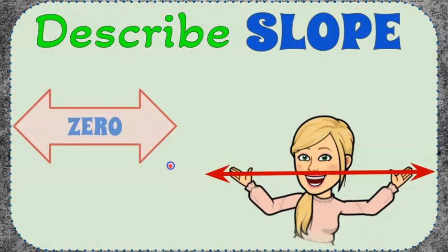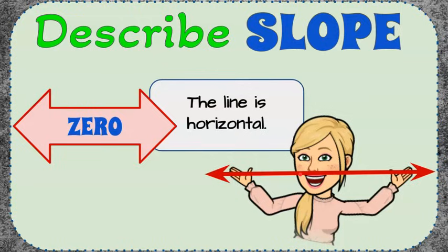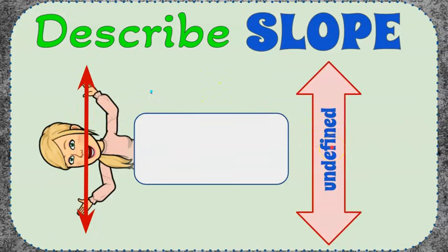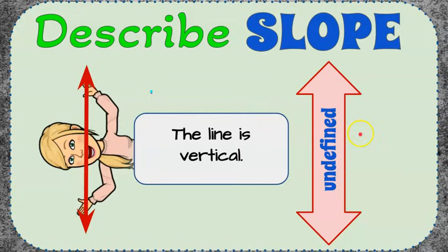A zero slope looks like a horizontal line. If you get a zero slope, you have a horizontal line. For a vertical line, the slope is undefined — if you have a denominator of zero, dividing by zero gives you undefined, which tells you the line is vertical.